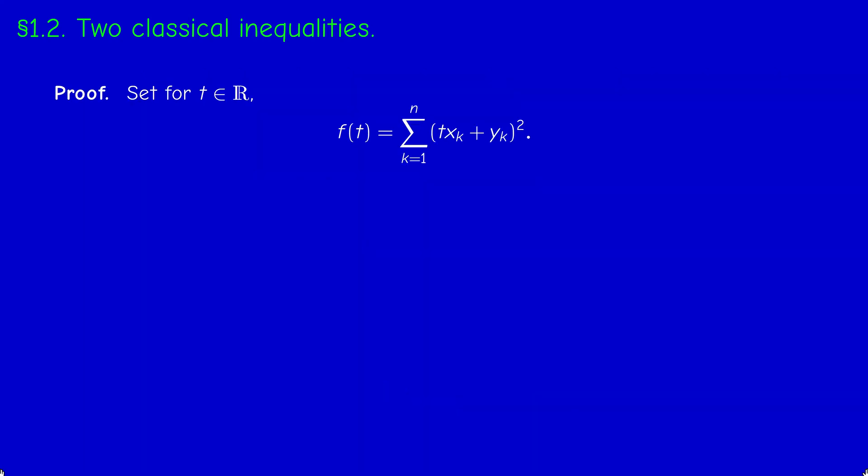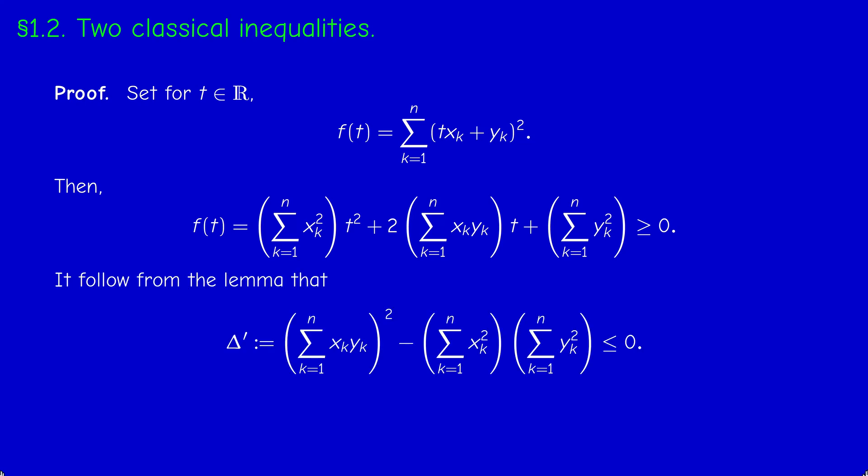So consider the polynomial in t, (txk plus yk)^2, and we do the summation over all k. This is a second-order polynomial, and if we expand the squares, we will get this expression. Since f(t) is non-negative, this polynomial has a constant sign for all t. So applying the lemma, the discriminant, or the reduced discriminant, is less or equal than zero. And that's it. If we take the square root, we get the result.